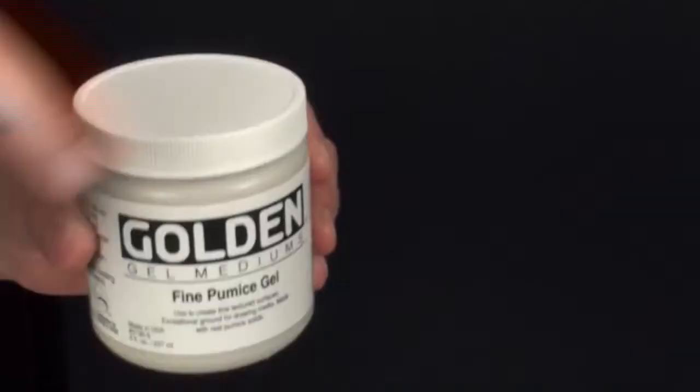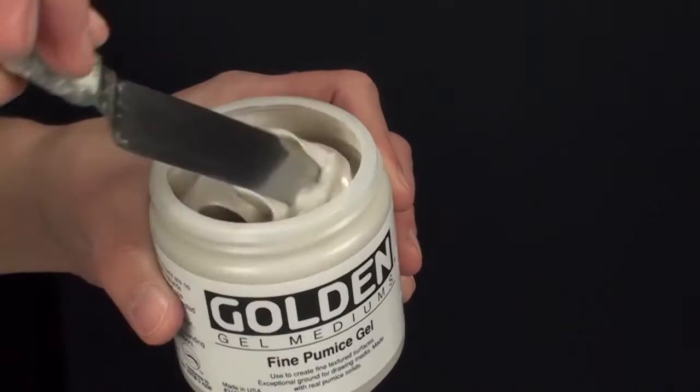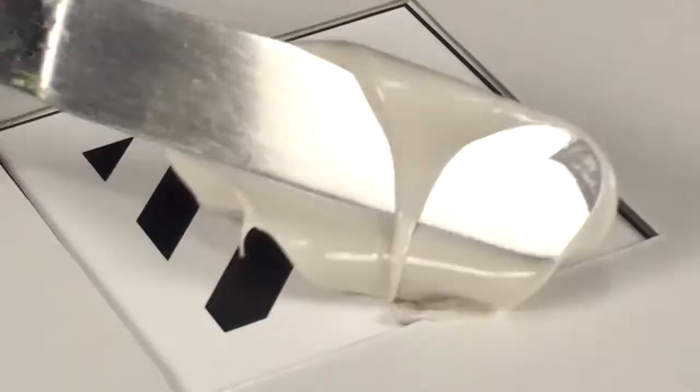Golden Artist Colors Fine Pumice Gel is a suspension of finely ground pumice in a clear 100% acrylic gel. The consistency of Fine Pumice Gel out of the jar is similar to our regular gel or heavy body paint.